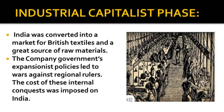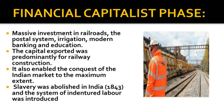Industrial Capitalist Phase: In the first half of the 19th century, India was converted into a market for British textiles and a great source of raw materials. The Company Government's expansionist policies led to wars against regional rulers, and the cost of this internal conquest was imposed on India. Financial Capitalist Phase: In the second half of the 19th century, in its bid to provide an outlet for investable surplus capital in England, the Company Government made massive investment in railroad, postal system, irrigation, modern banking and education. The capital exported was predominantly for railway construction, which helped move British troops quickly and enabled conquest of the Indian market to the maximum extent. Slavery was abolished in India in 1843 and a system of indentured labour was introduced.